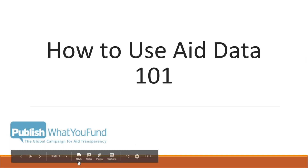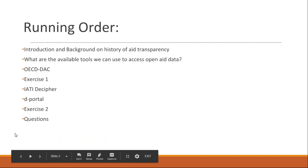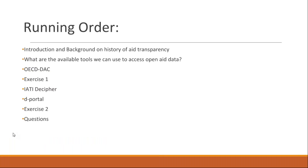Let us quickly go over the running order for today. We'll begin with a brief introduction and background to aid transparency, and talk about why aid transparency is useful and what kind of questions you can answer using the resources we'll be demonstrating. We will then move on to the three main data portals: OECD DAC, then iADI, and finally the World Bank Open Data.